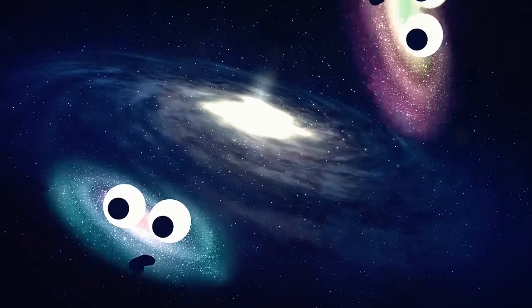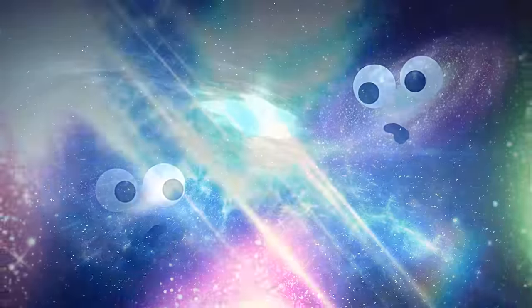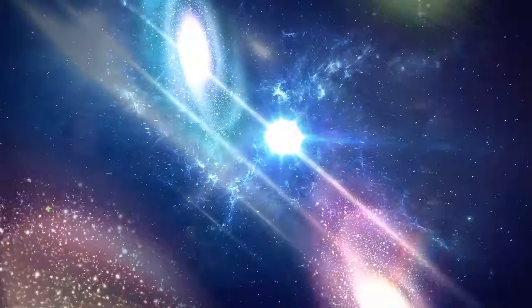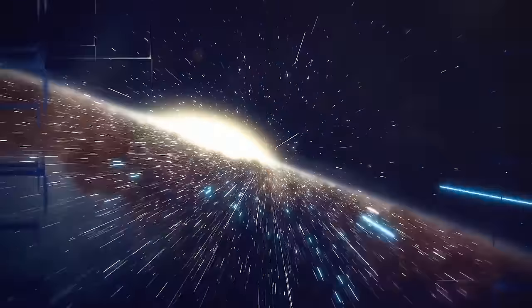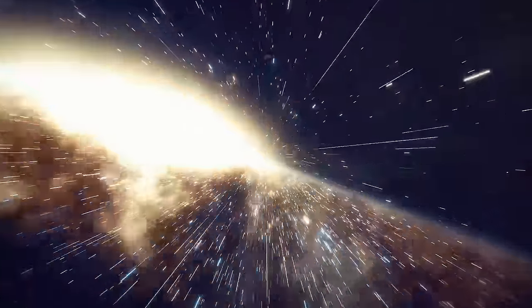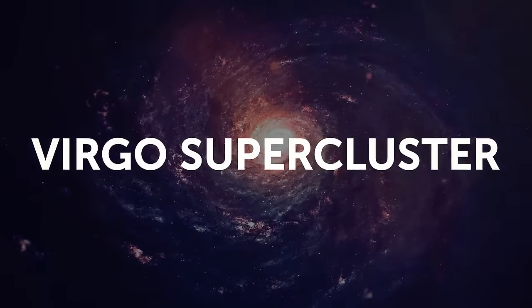Our Milky Way is friends, in a way, with galaxies like Andromeda and Triangulum. And altogether, they're a family called the Local Group. This family of galaxies is part of an even bigger bunch called the Virgo Super Cluster.